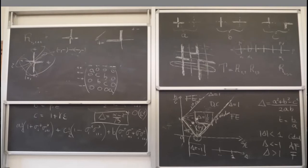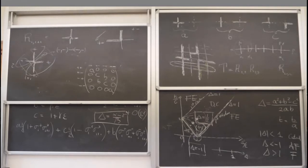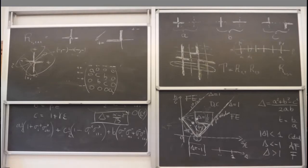One can prove that the XXZ chain is integrable because it has infinitely many integrals of motion. These integrals of motion are the coefficients of the expansion of the transfer matrix in the spectral parameter. Since the transfer matrices commute among themselves, the coefficients of the expansion also commute, forming a complete set of integrals of motion. This is explained in Baxter's book.